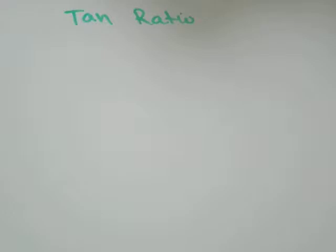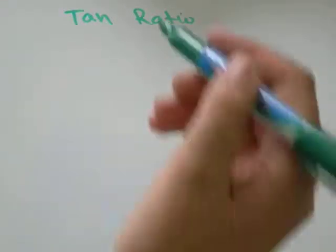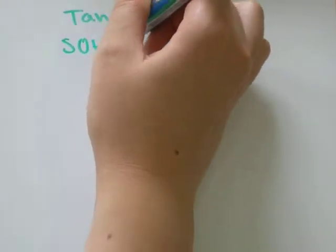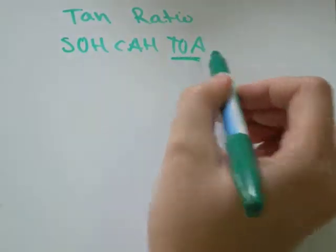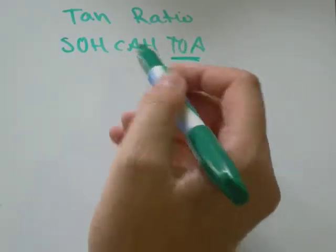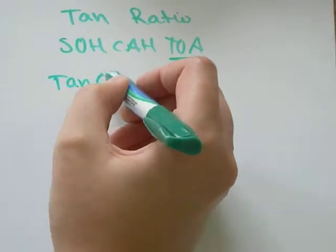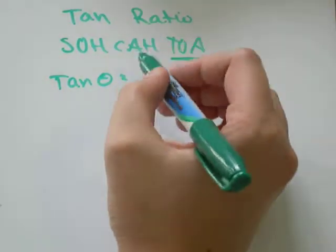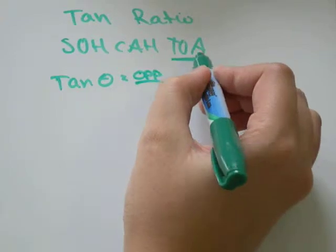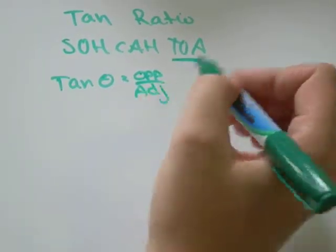Tan is just short for tangent, if you're wondering. And remember our rhyme SOHCAHTOA. The TOA part represents tangent. T is for tangent. So, tan of any degree number equals O for opposite divided by A for adjacent.